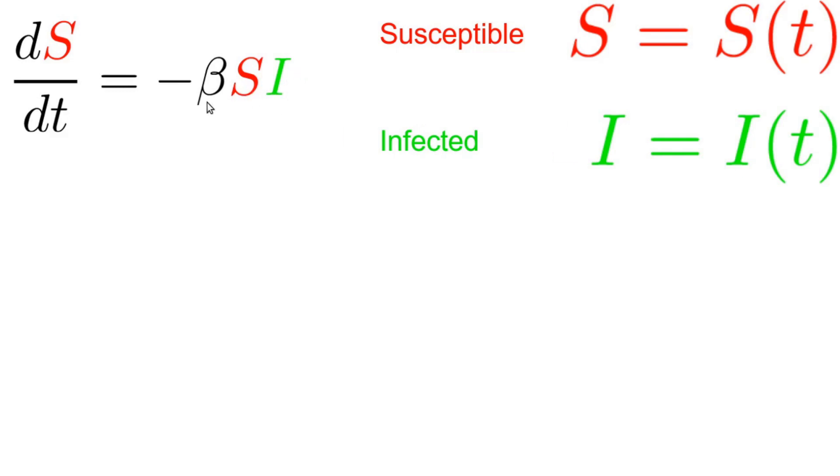Clearly this isn't quite enough information to figure out what S and I are in general because we don't know anything about I. So we need our second equation which describes the rate of change of I. This says that the rate of change is proportional to the function I itself. That's a more complicated relationship.